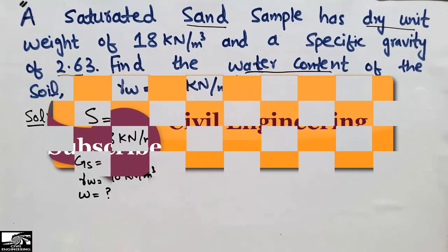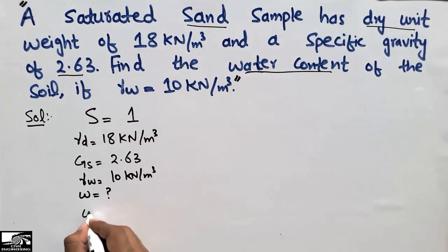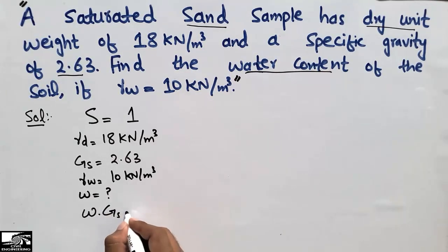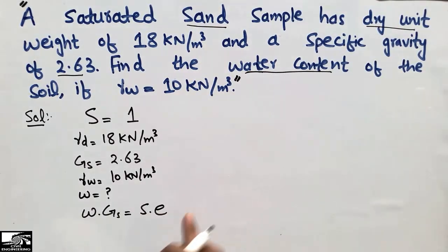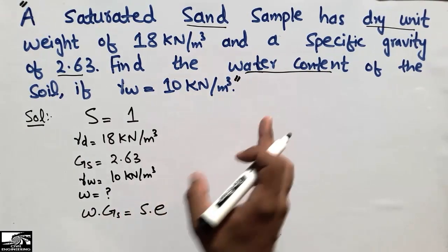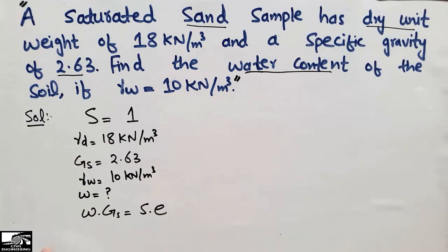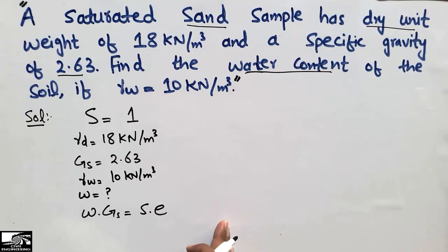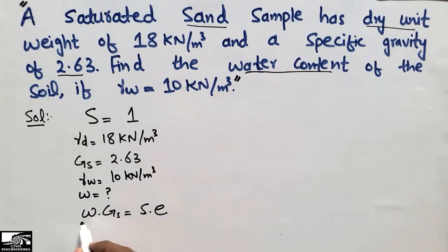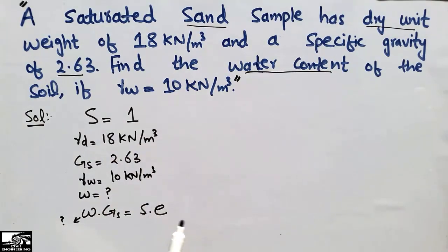To start the solution, I will use the formula: w·Gs = S·e, where w is water content, Gs is specific gravity, S is degree of saturation, and e is void ratio. The specific gravity is 2.63 and the degree of saturation is 1, but the void ratio e is unknown. So we need to find e first using another formula.